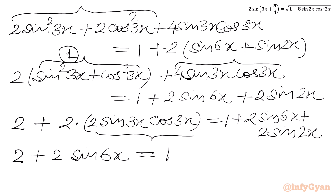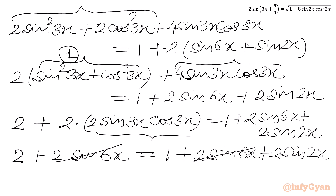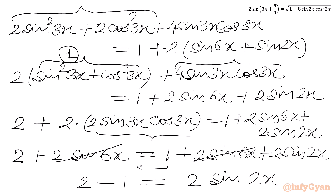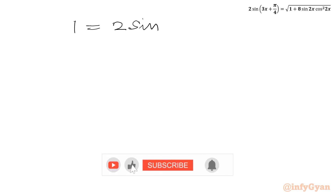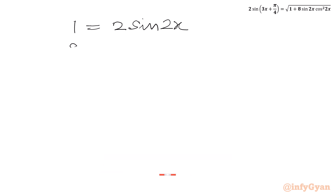Now we subtract 2 sin 6x from both sides, and take 1 to the LHS: 2 minus 1 equals 2 sin 2x, so 1 equals 2 sin 2x. Dividing both sides by 2, we get sin 2x equals 1/2.